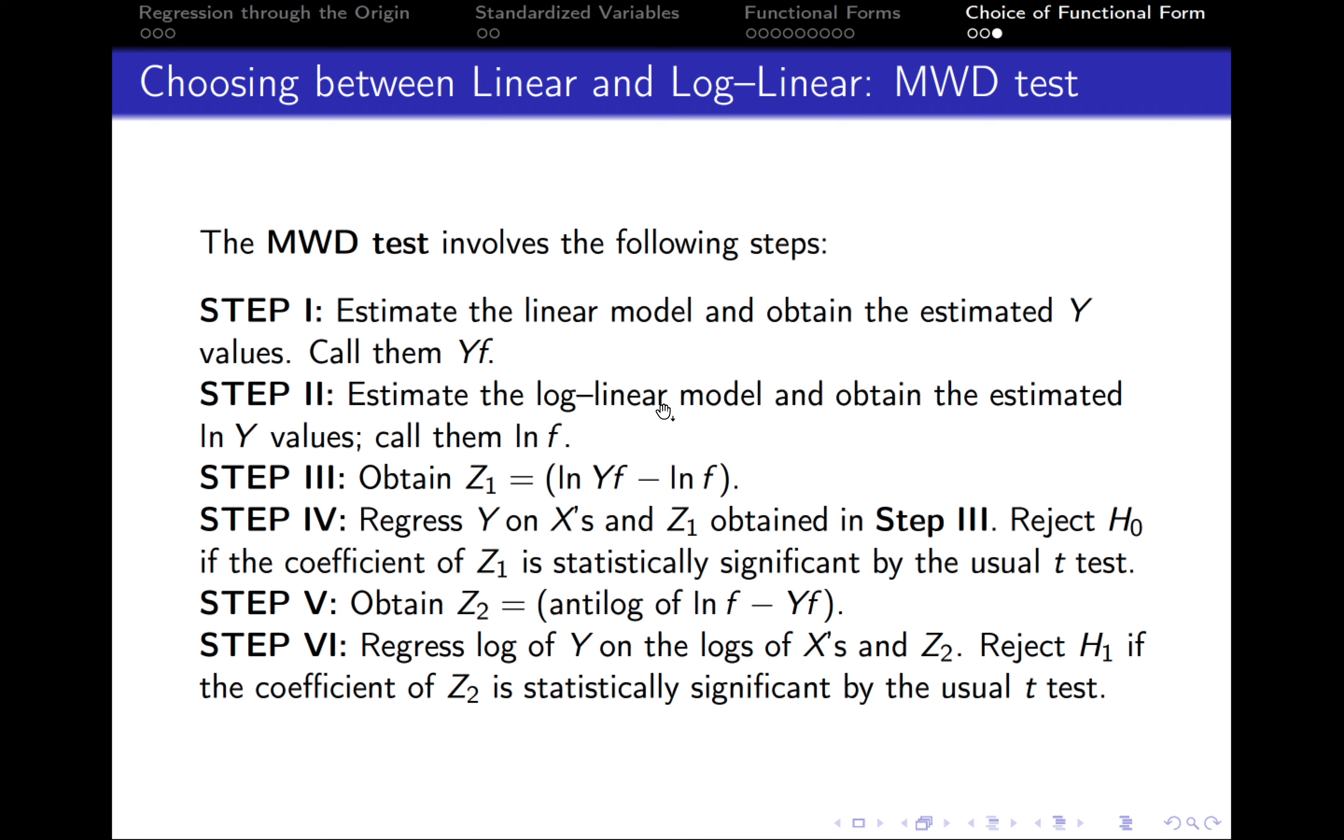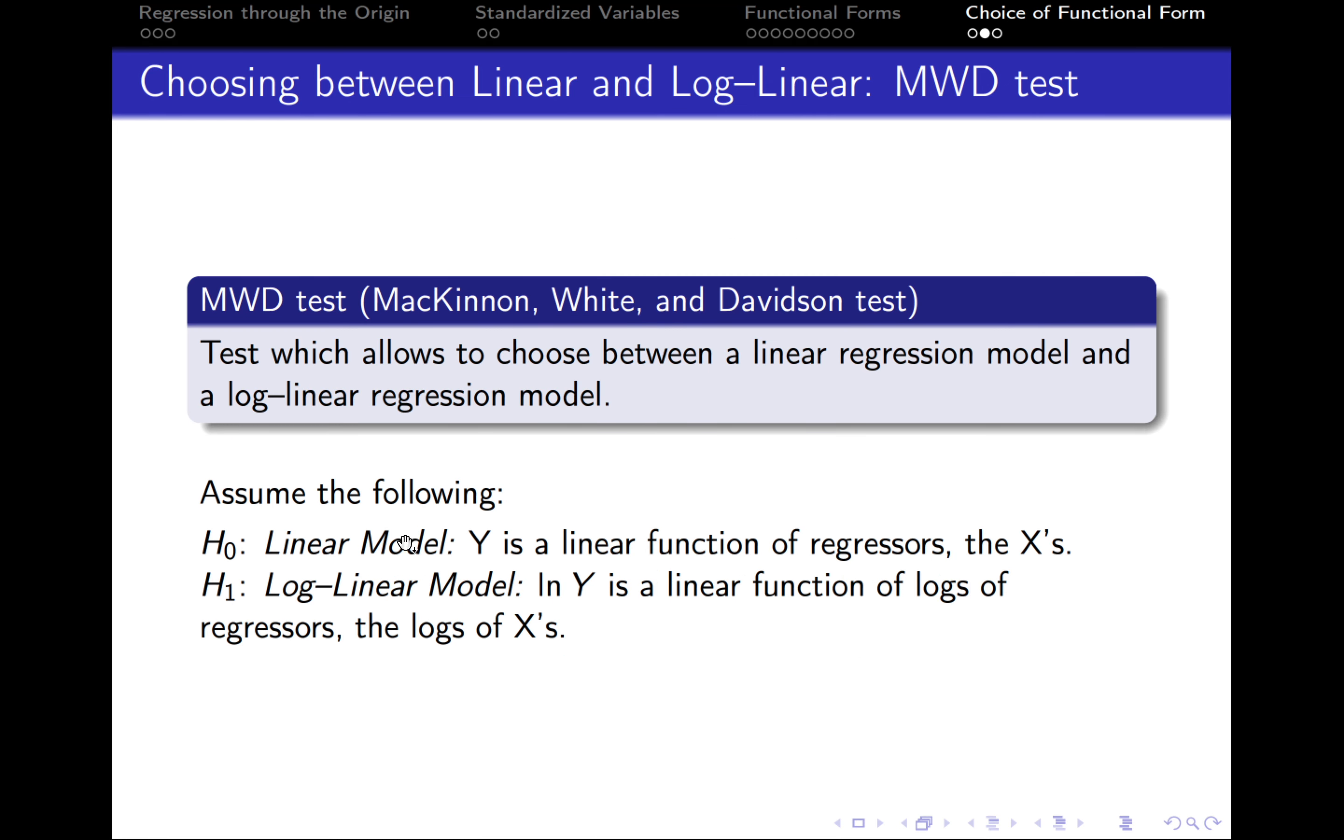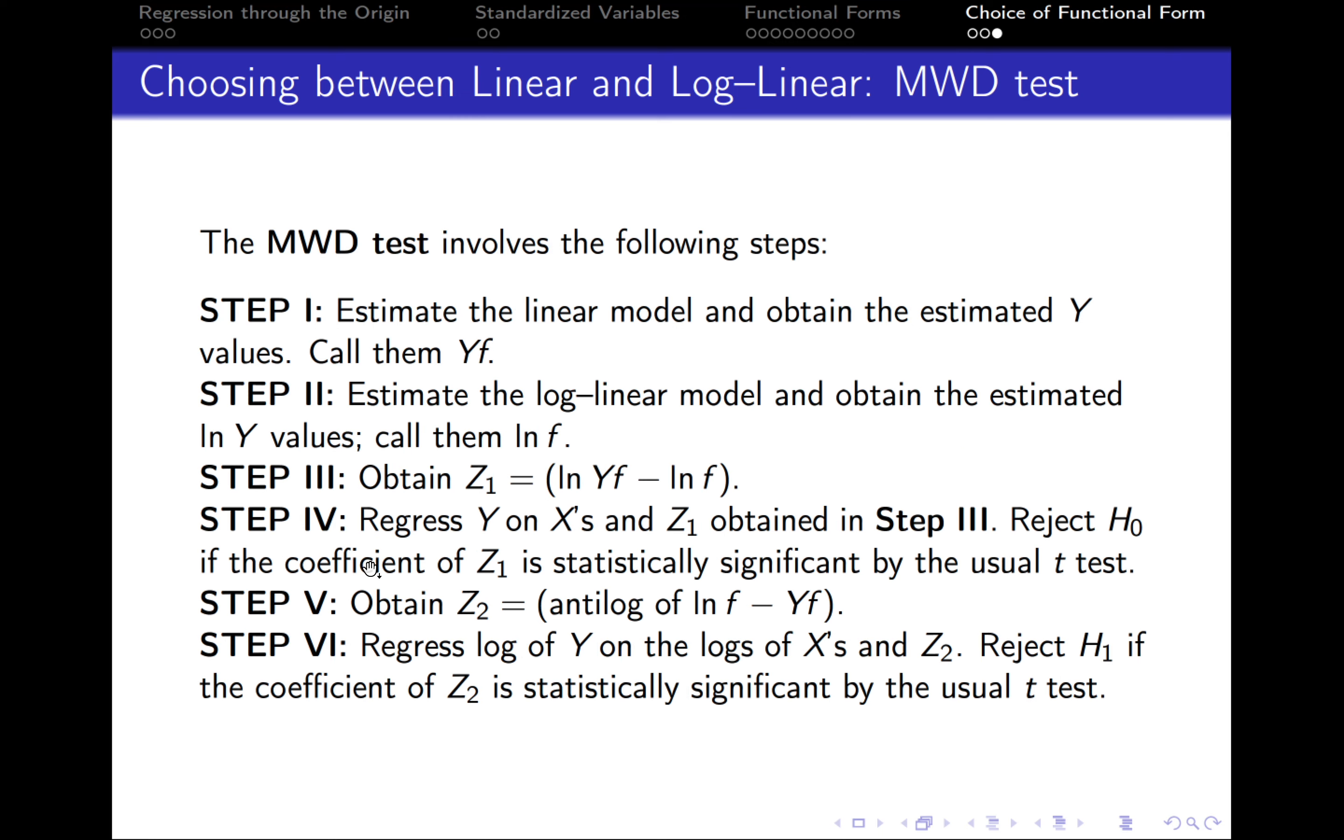After this, we need to regress the value of Y on X's, so run a linear model, and also regress it on Z1 obtained from Step 3. We reject the null hypothesis, so we reject that the linear model is the correct one if the coefficient of Z1 is statistically significant, if it is different from zero.